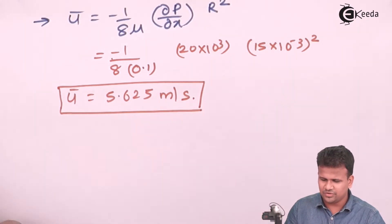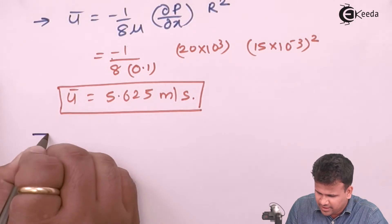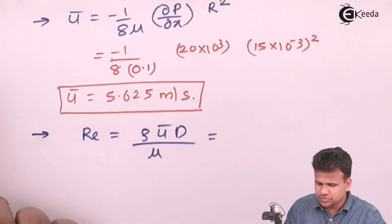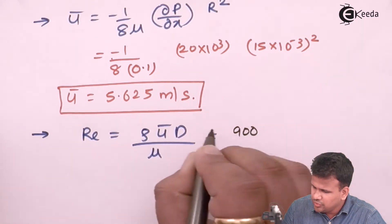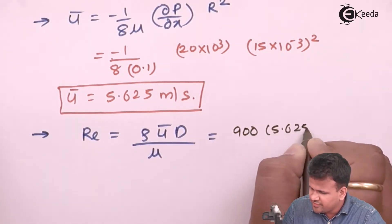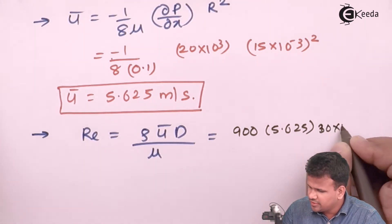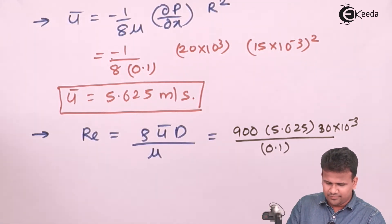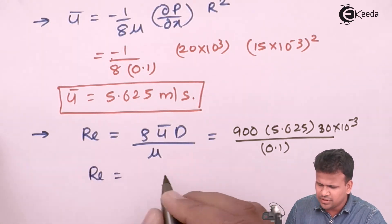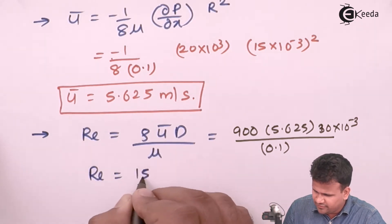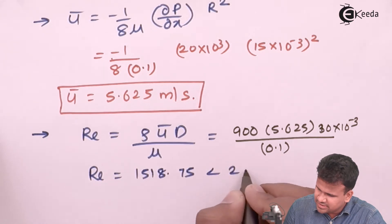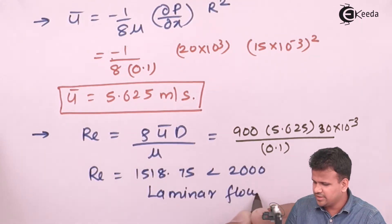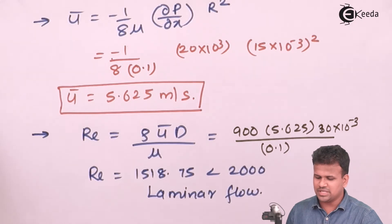Now, once we have Ū, we can calculate all other quantities. The Reynolds number Re = ρŪD/μ = (900 × 5.625 × 30×10⁻³) / 0.1, which comes out to be 1518.75. This is less than 2000, and hence the flow is confirmed to be laminar flow.